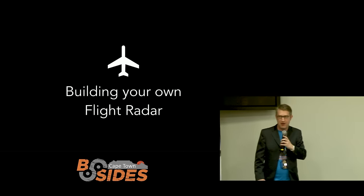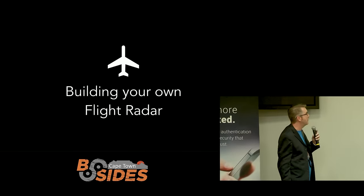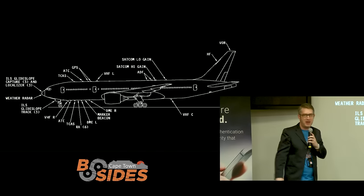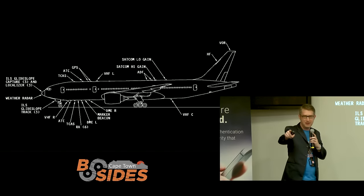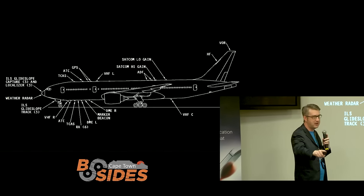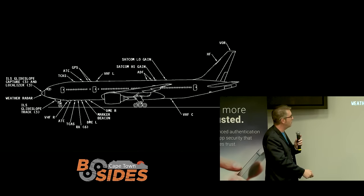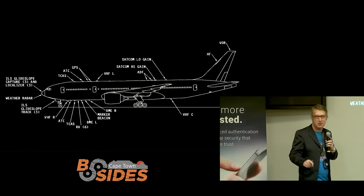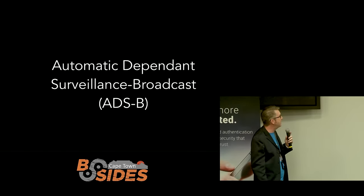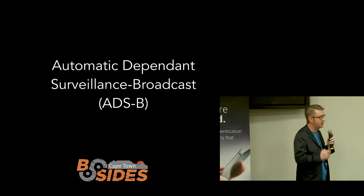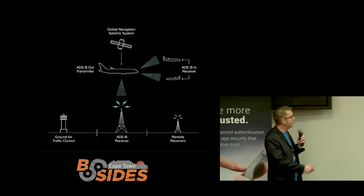Let's talk about how you can build your own flight radar. Who knows what type of plane this is? It's a Boeing 777 — it's got 31 antennas on it, and we're going to go through one. That's for something called ADS-B — Automatic Dependent Surveillance Broadcast. Very similar to AIS but designed for aircraft.